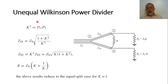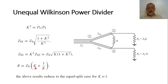If we make the ratio K equal to 1, we return to the original equal Wilkinson power divider. With K equals 1, Z-naught-3 equals Z-naught multiplied by the square root of (1 plus 1), which is Z-naught times square root 2. Z-naught-2 is also Z-naught times square root 2. The value of R would be Z-naught multiplied by (1 plus 1 over 1) equals 2 Z-naught. This confirms that the results reduce to the equal split case when K equals 1.